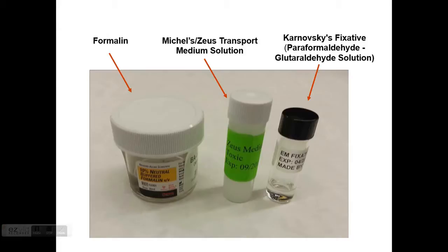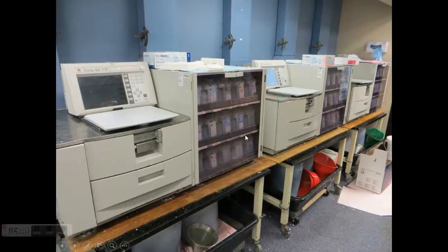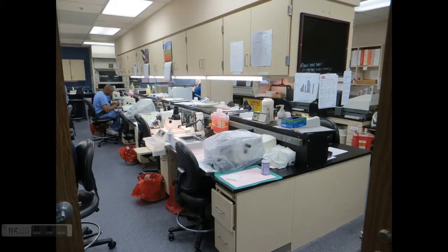For light microscopy, formalin-fixed tissue gets wrapped in tissue paper, put in a tissue bag, and then placed into a cassette. This is sent to processors, and after processing, a technician embeds the tissue into paraffin. Eventually a paraffin block is created that sits on the reverse of the cassette. This processor automates most of the process, but we still need technicians to embed into paraffin and cut sections.